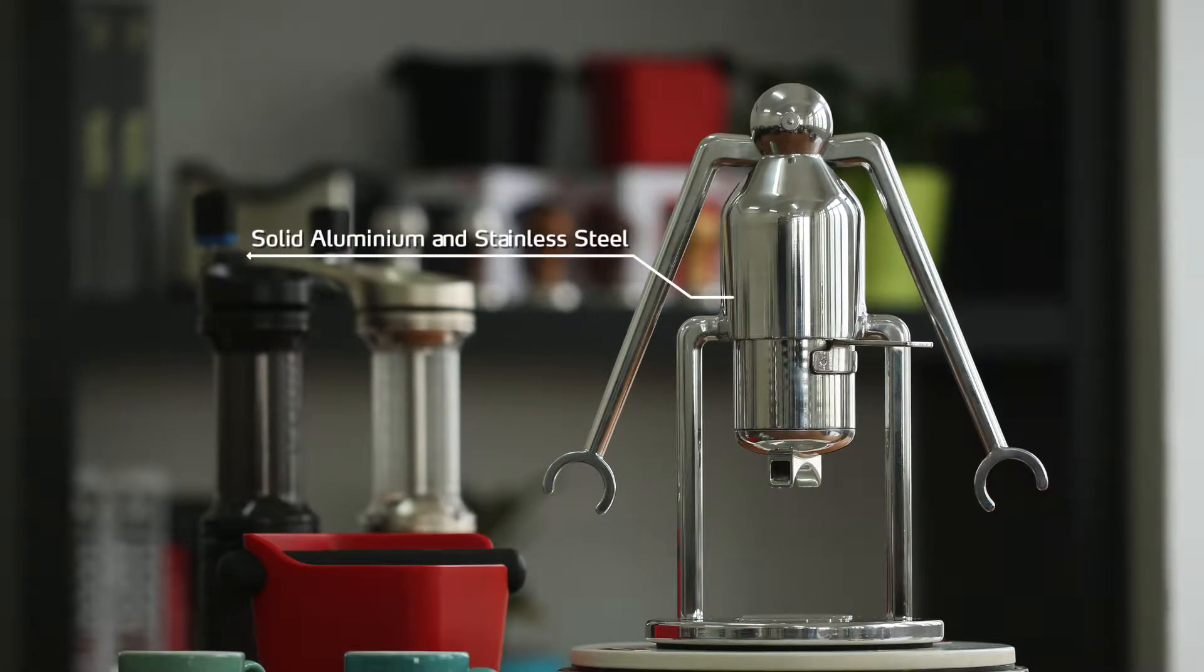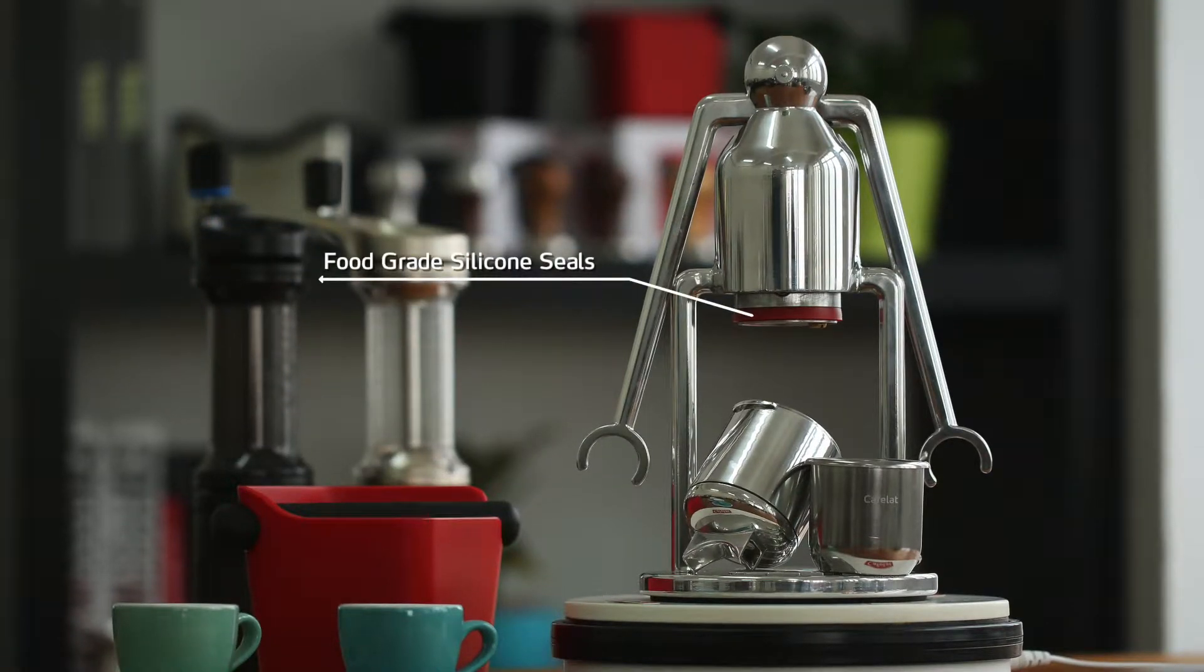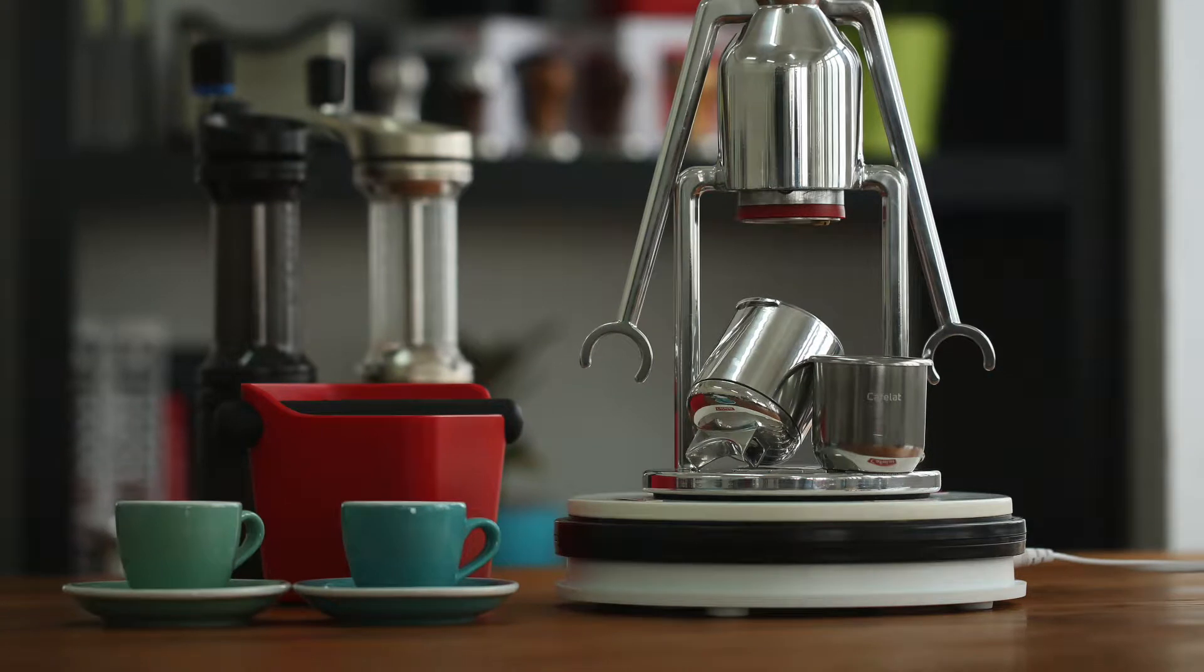The Robot is made entirely from premium materials such as stainless steel, die-cast aluminum, and food-grade silicone. There is no plastic. It features 58-millimeter stainless steel filter baskets and filter screen, food-grade silicone seals, and a non-slip silicone base.